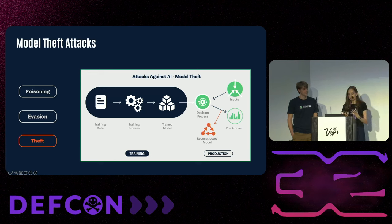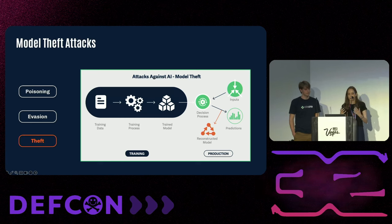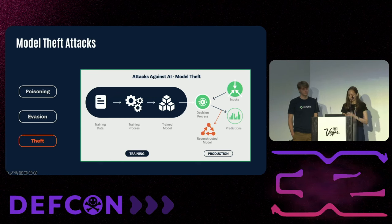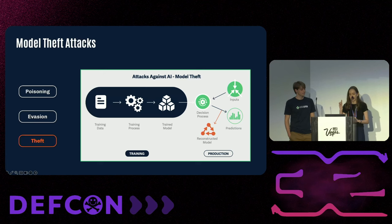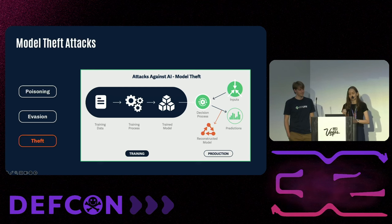Model theft attacks: adversaries target AI models to mislead and steal them, leading to intellectual property theft by replicating or extracting sensitive data. The groups targeting this include nation-states, competitors, and criminals. Even without public access via interfaces or APIs, you can replicate models or extract valuable information. These are called oracle attacks, noted by NIST, and they include three types: extraction attacks — stealing the model's structure; inversion attacks — stealing the training data; and membership inference attacks — identifying specific data in the training set.